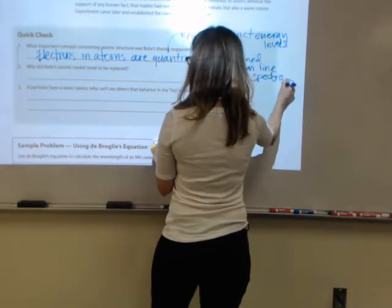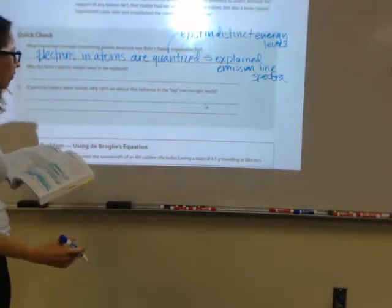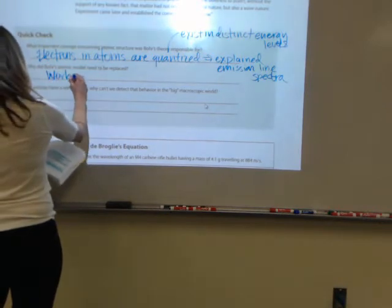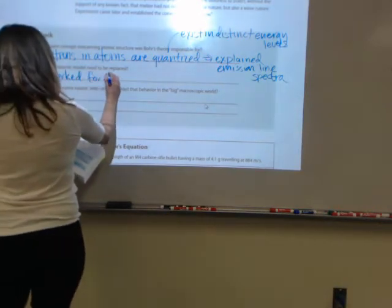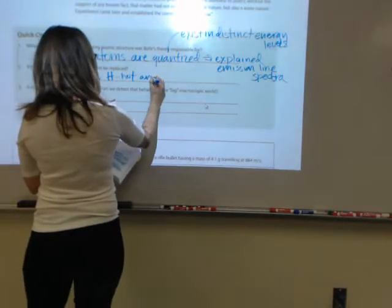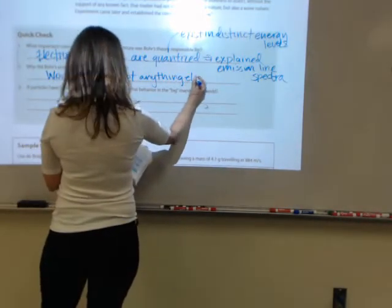Number two, why did Bohr's atomic model need to be replaced? Because it only worked for hydrogen. It didn't work for anything else.